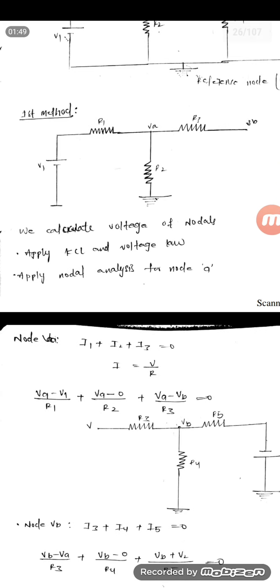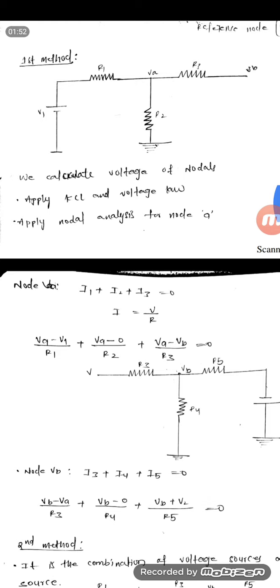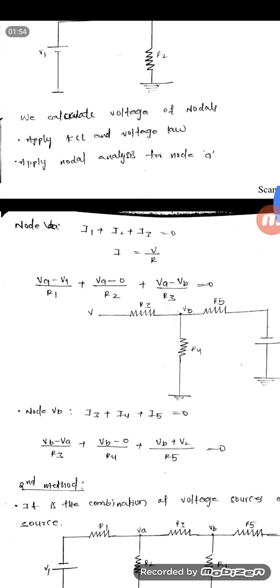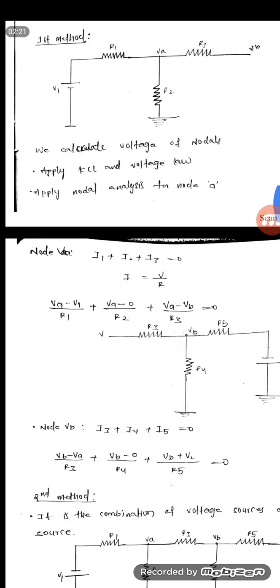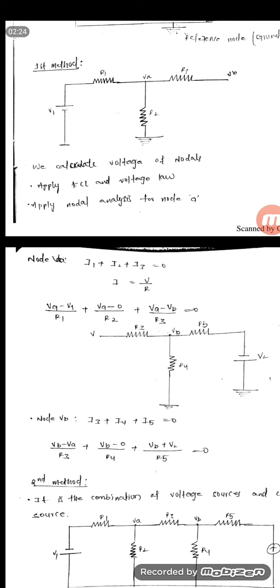Applying the nodal analysis for node A. Here I am assuming that all the currents are leaving from the node — I am assuming all as positive. So here I1 + I2 + I3 = 0, according to KCL: the sum of currents at a particular junction or node is equal to 0.